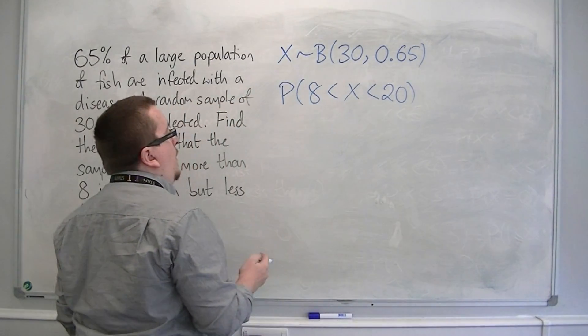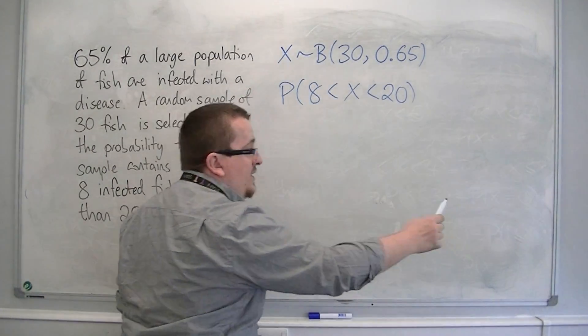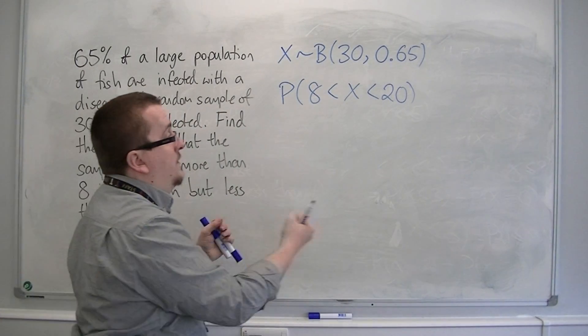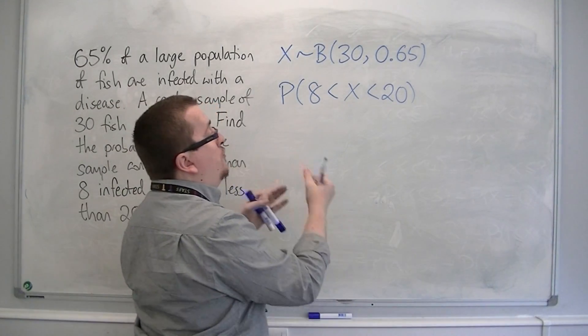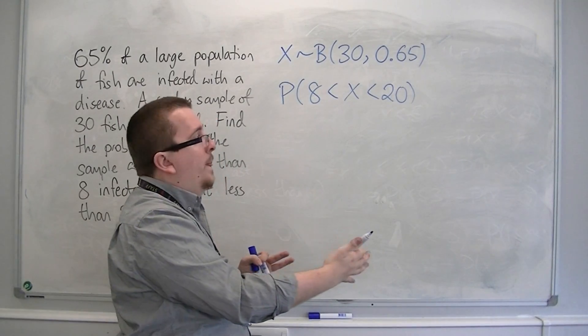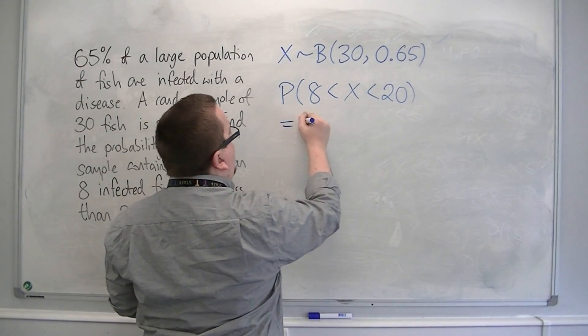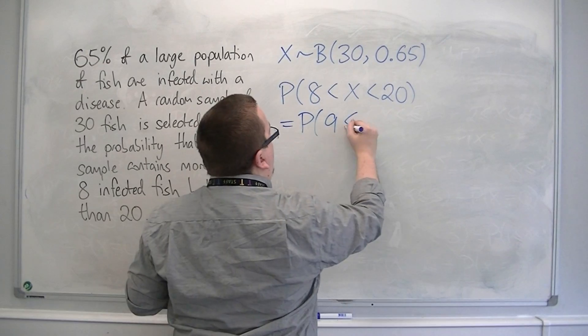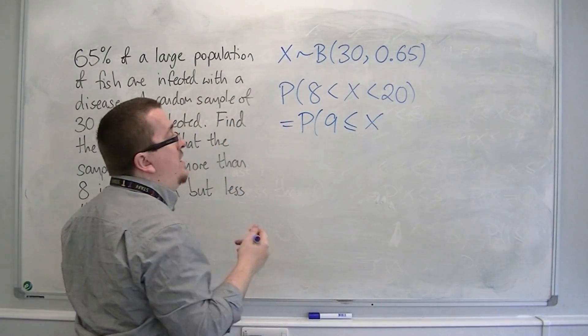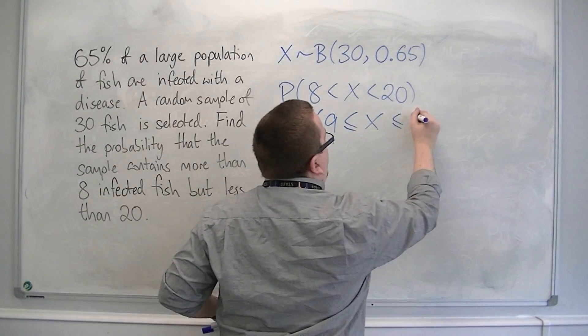Because we're looking at between 8 and 20, not including those two at the end, the 8 and the 20, that means we're going from 9 up to 19. So this is the probability of X being greater than or equal to 9, but less than or equal to 19.